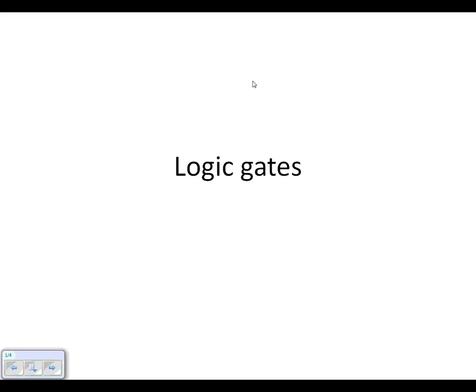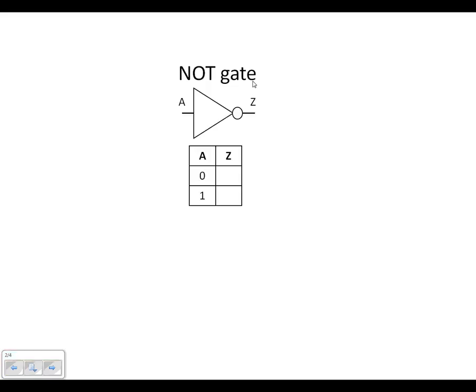Logic gates. What we're going to look at is how truth tables and logic gates are linked. We've got a NOT gate — it's got input A and output Z. The truth table shows all combinations of input and the corresponding outputs.